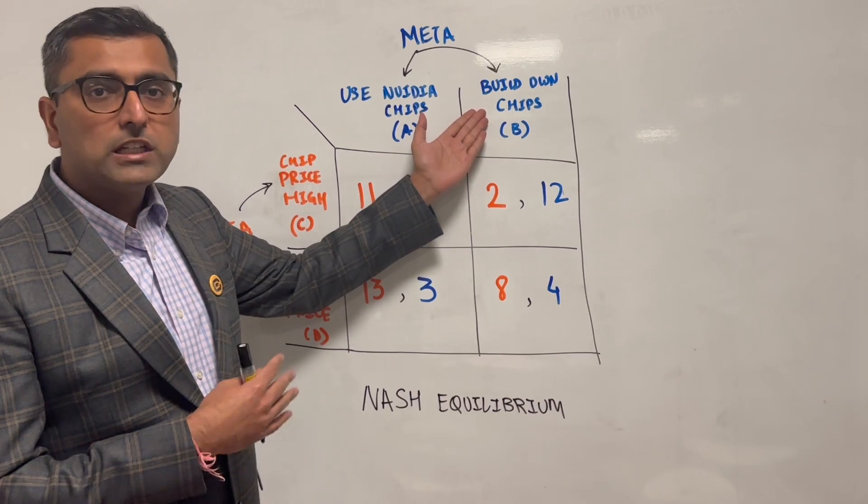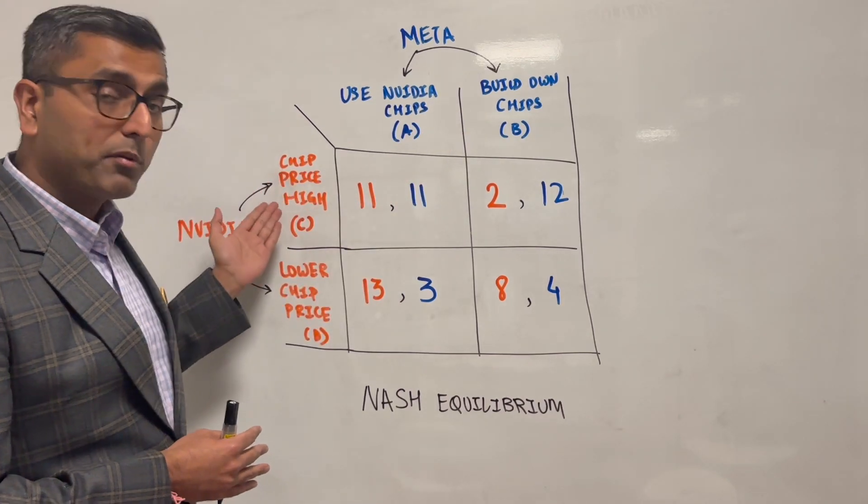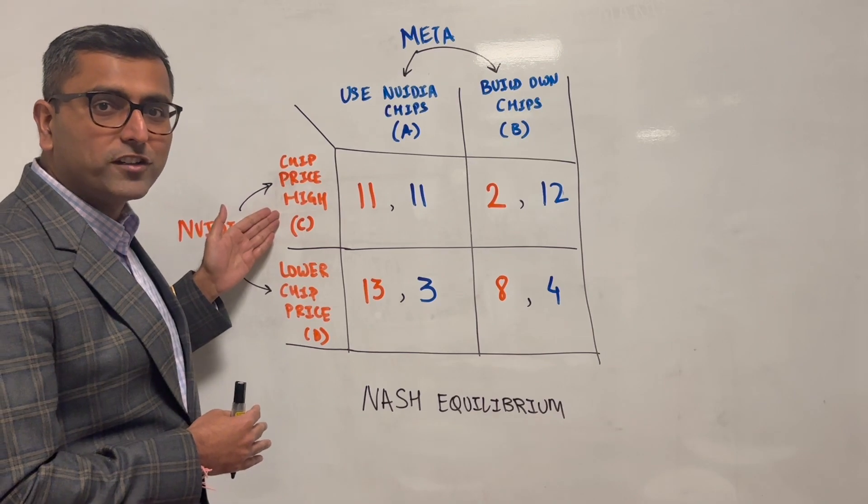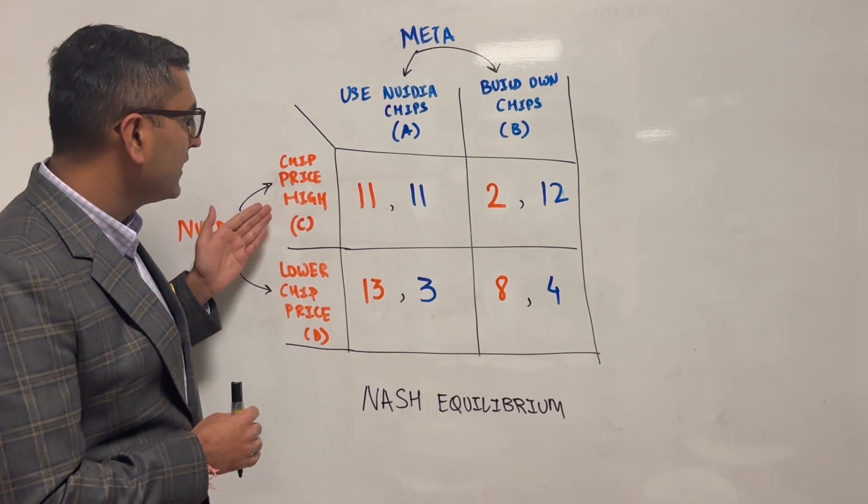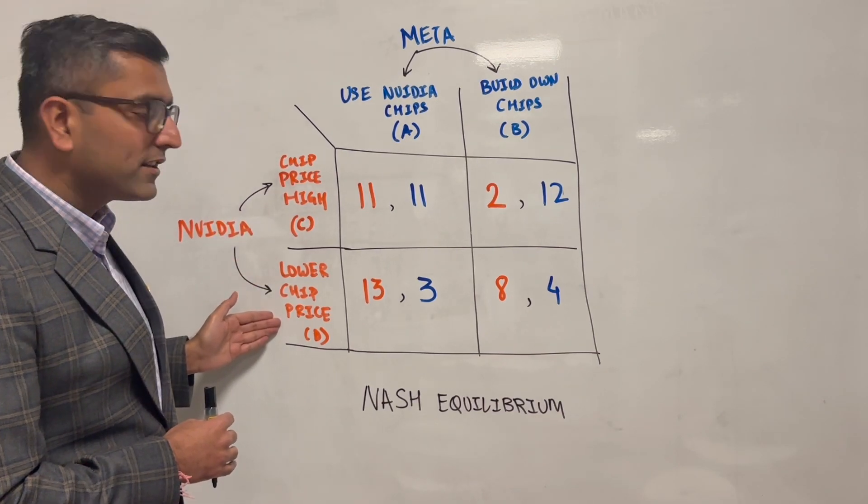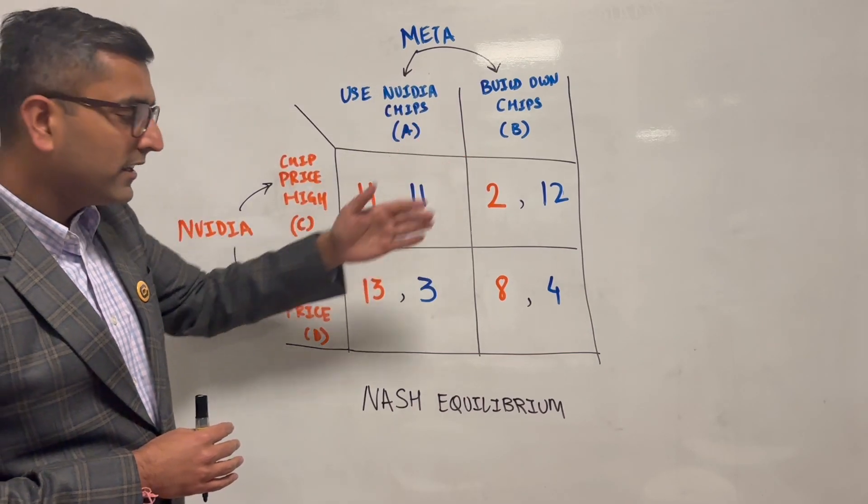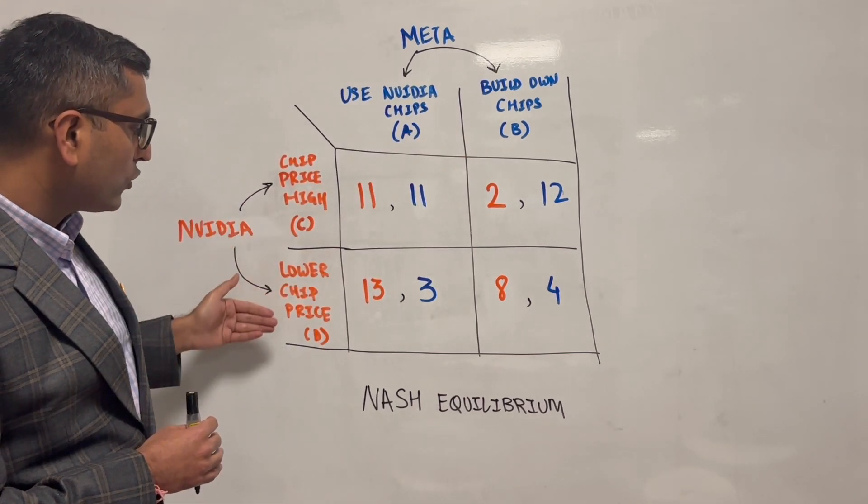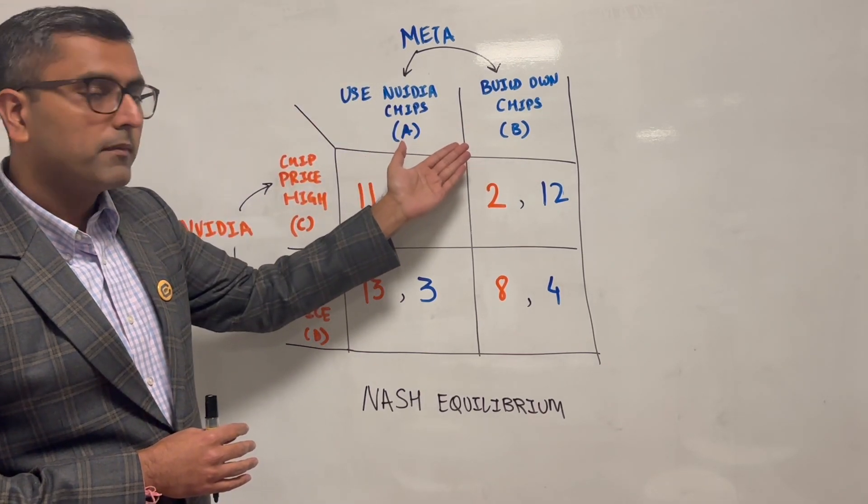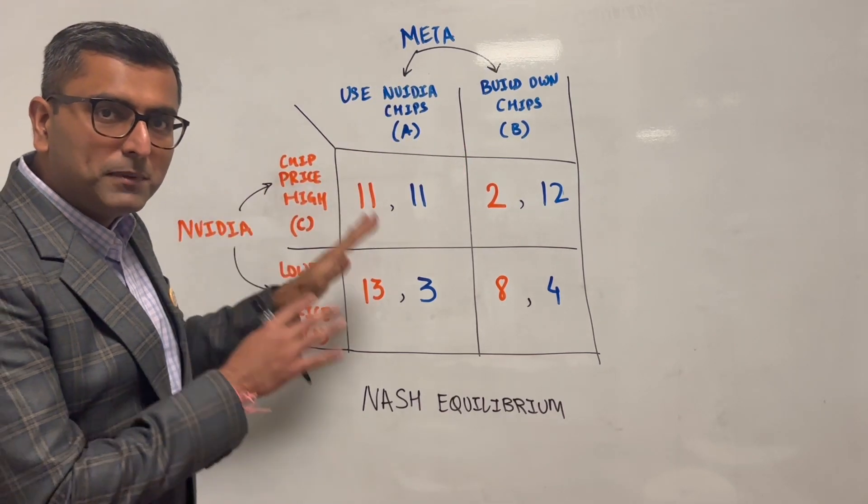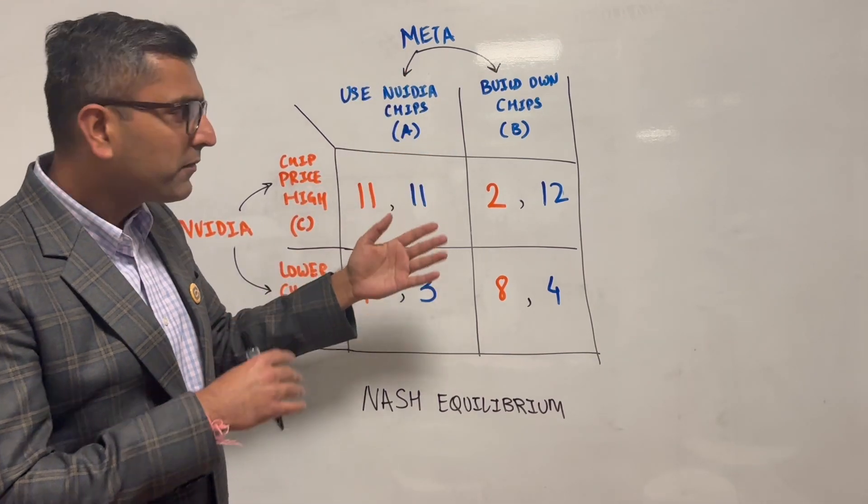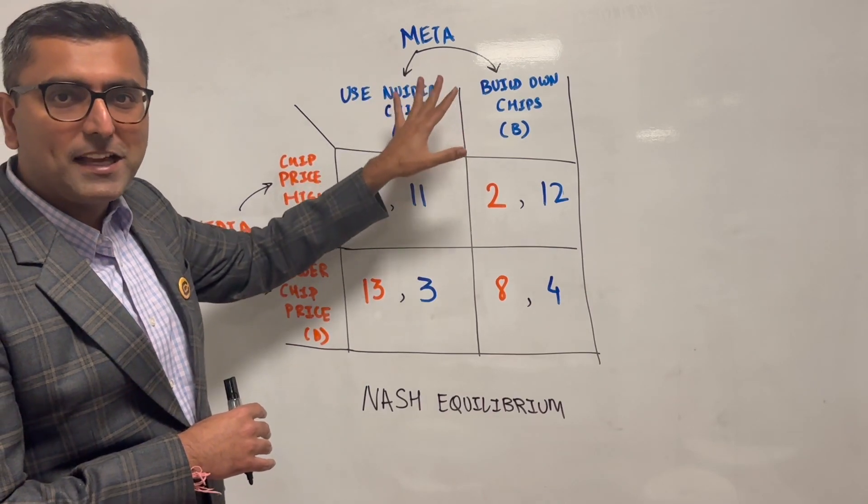So that's the two choices in front of Meta: continue to use Nvidia and their chips, or alternatively choice B, build your own chips so that you are not relying on Nvidia's high prices. Nvidia also has two choices: given they have a superior product today that no one is close to, continue to keep high prices for those chips, or lower the chip price to deter competition or new entrance. This is a very simplistic example of a real-life situation.